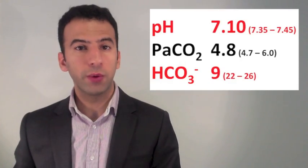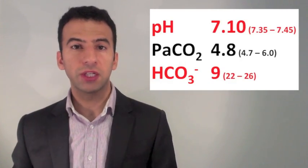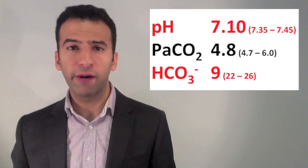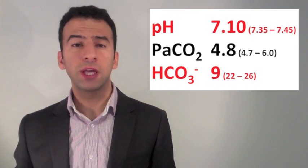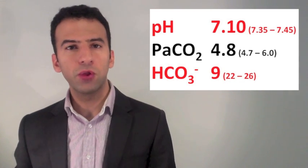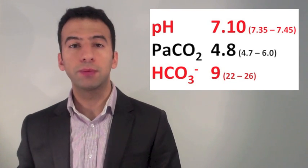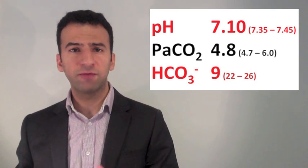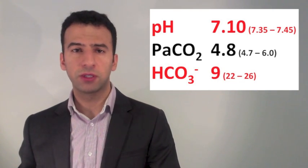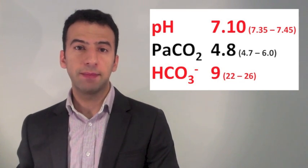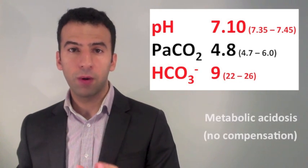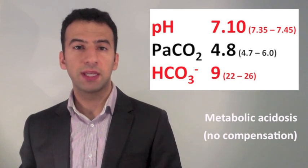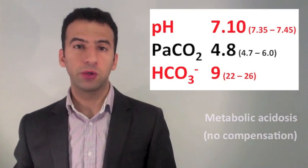The last example before we take away the colour codes: the pH is 7.1 — that's very acidic, your patient's really not very well at all. Step 2: the CO2 is normal. Since they're not moving in the same direction, the problem is probably metabolic. In Step 3, the bicarbonate is 9 — that's very low and explains the acidemia. So this is an uncompensated metabolic acidosis, since the CO2 is normal.